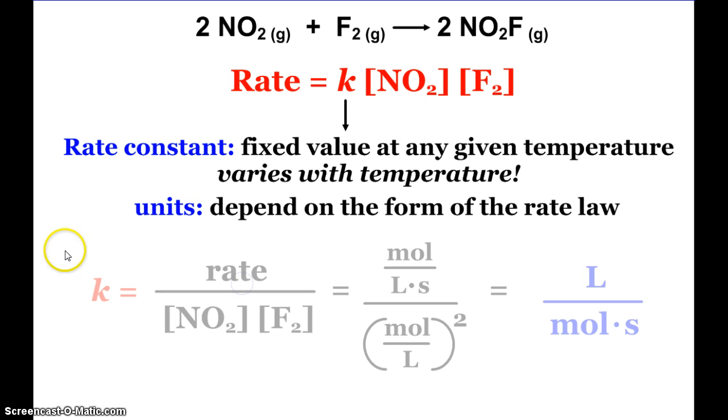Here we can see what the units would be. If I rearrange the equation, K equals the rate divided by the two concentrations. My rate is moles per liter seconds and those concentrations are moles per liter squared. If you do the proper math and canceling, you end up with this rate constant having units of liters per mole seconds. The AP exam tends to like to see if you can calculate rate constant units every once in a while.